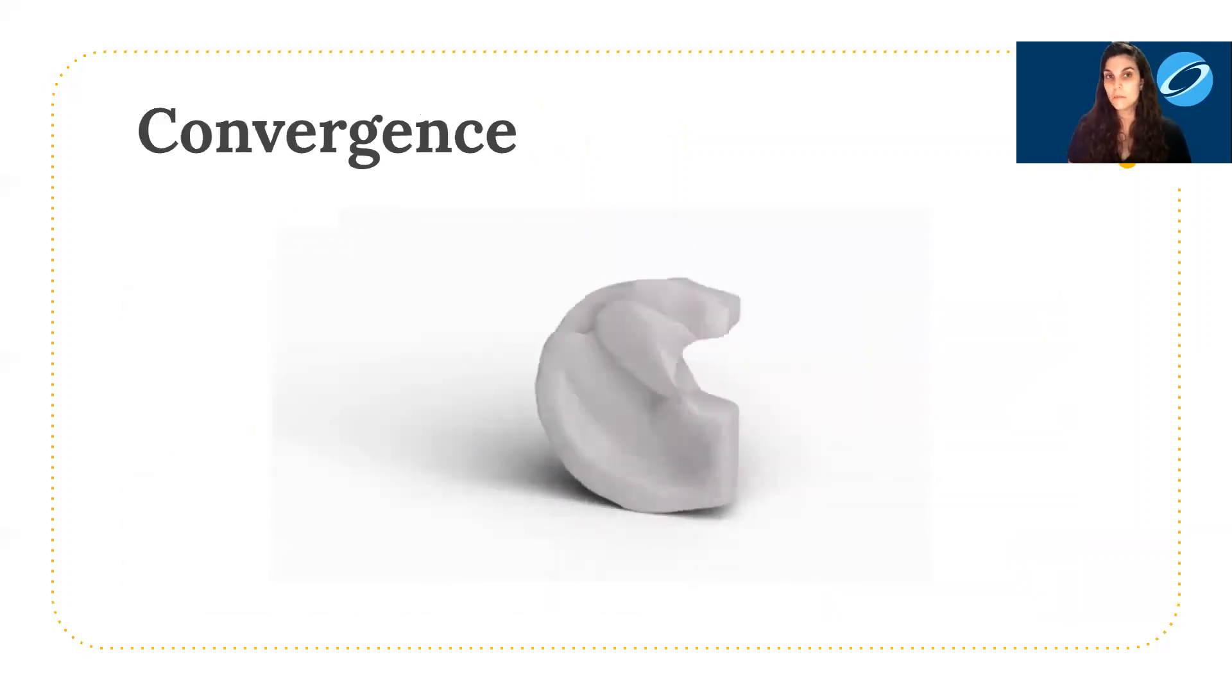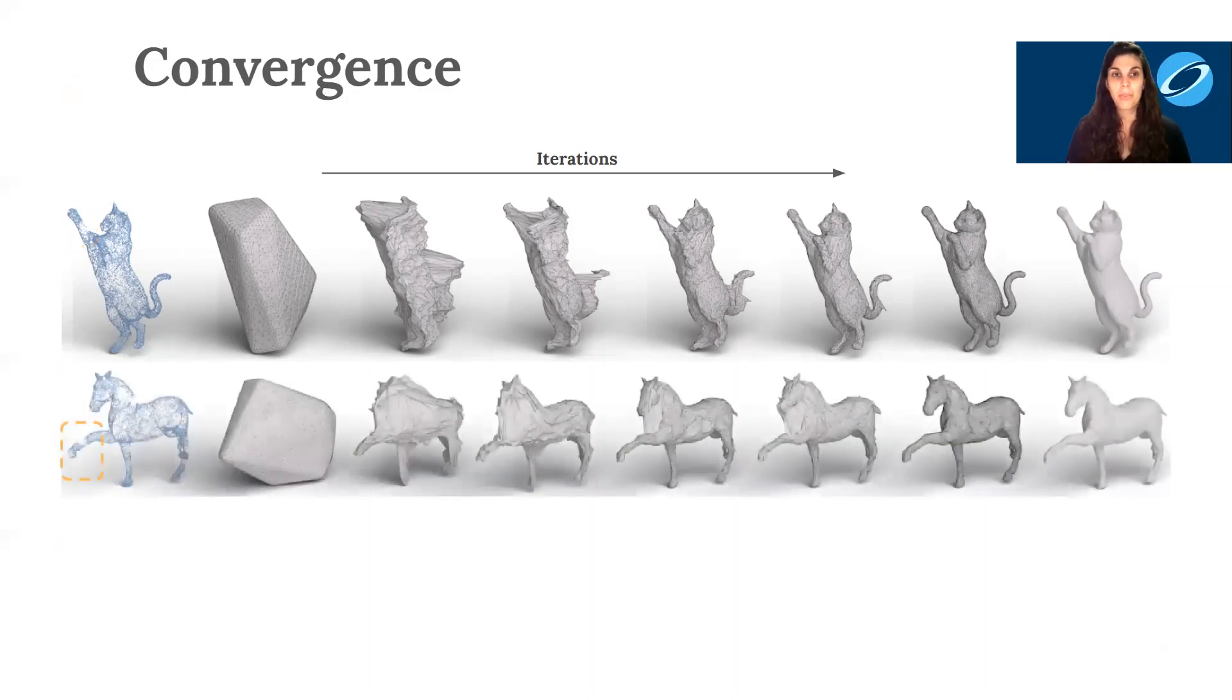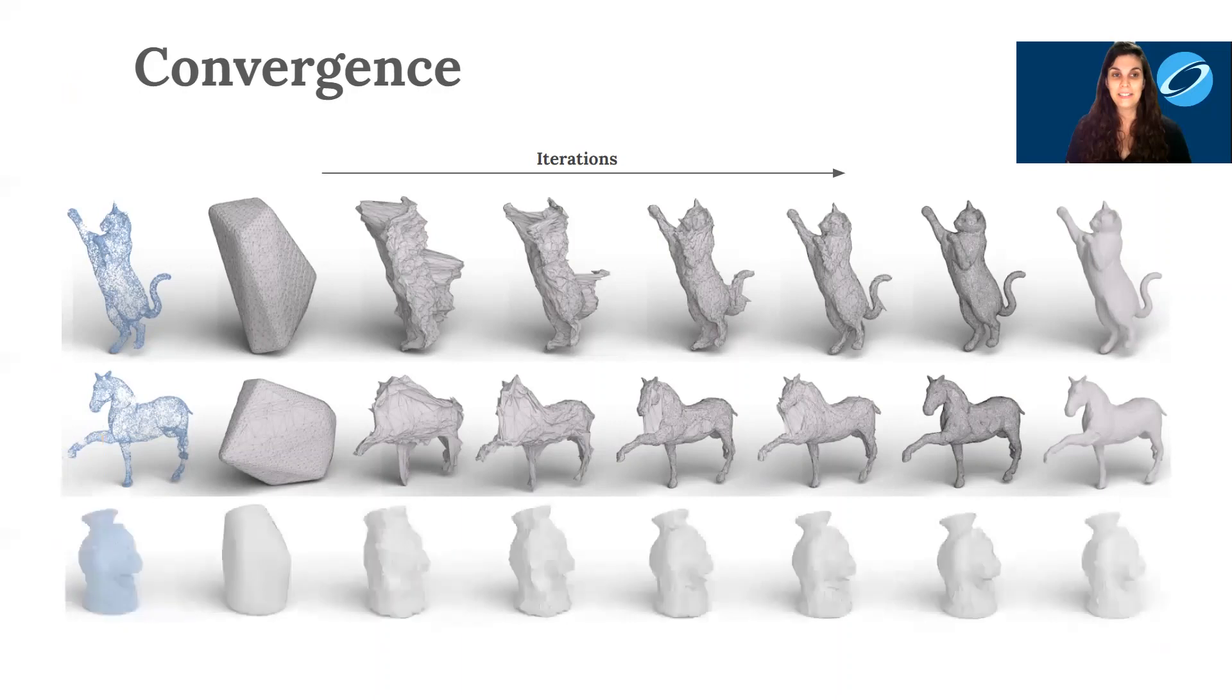Here you can see more iterations on the G example. Another example of how the self-prior convergence looks. Notice how the low-density sampled regions are still accurately reconstructed. And another example. And finally, we have an example with fine details.